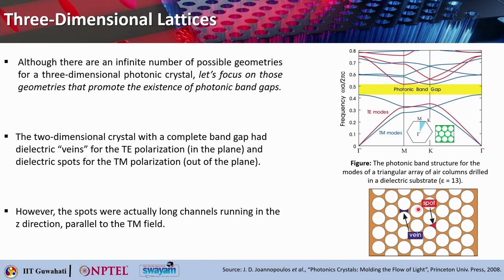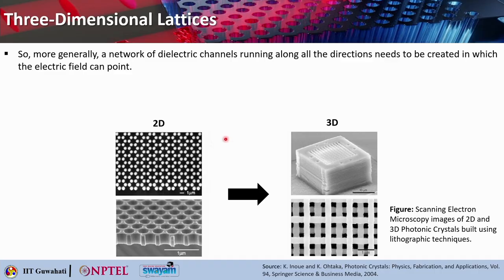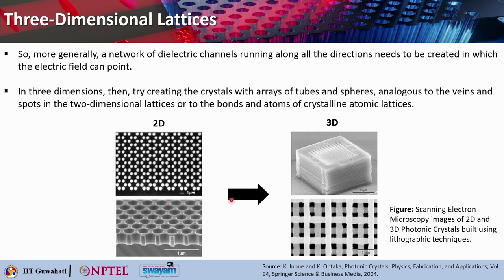In the 2D case, the spots and vanes extend along the z-direction infinitely, parallel to the TM field. In three dimensions, one can create crystals with arrays of tubes and spheres, analogous to the vanes and spots of the 2D lattice — basically replicating the bonds and atoms of crystalline atomic lattices. The choice of lattice and how it is connected is very critical in determining how exactly the band gap can be obtained.